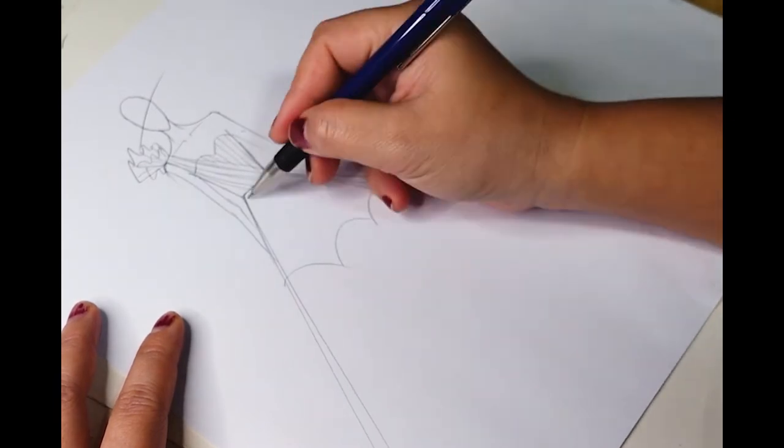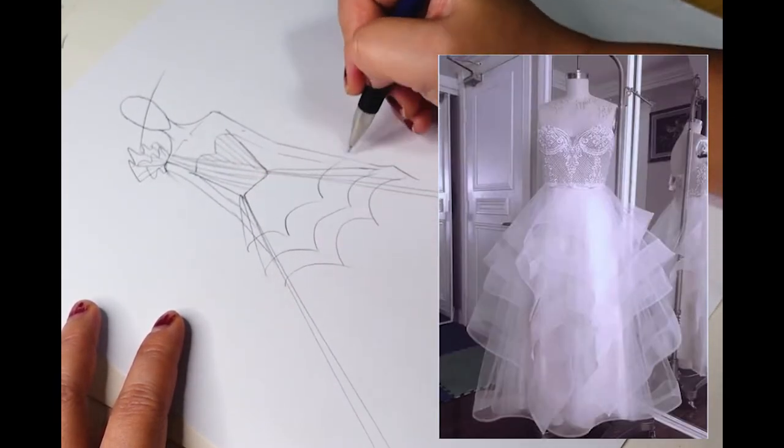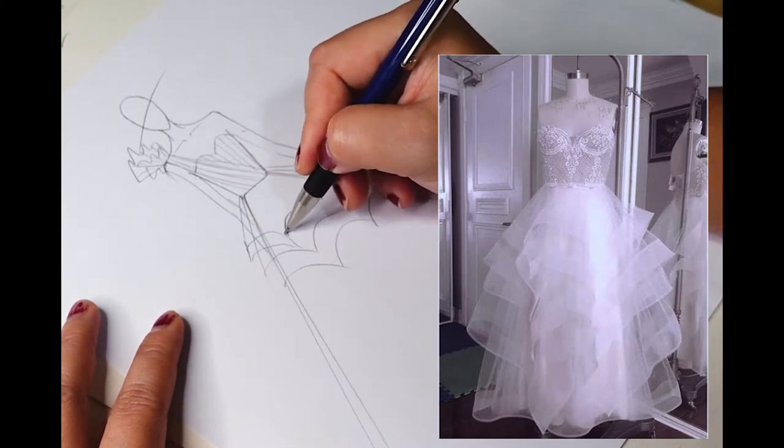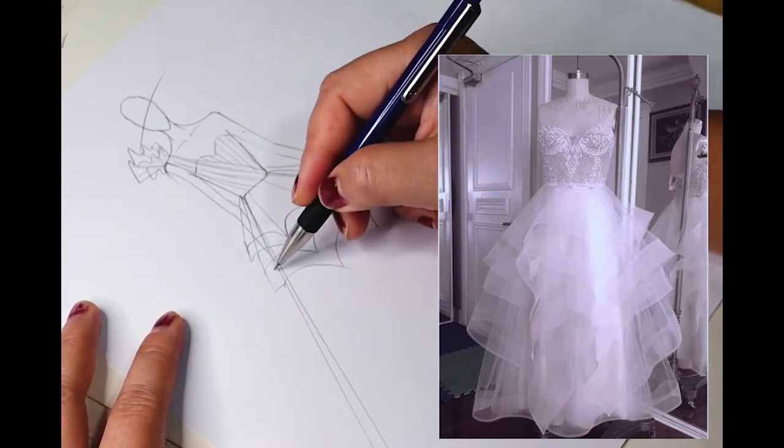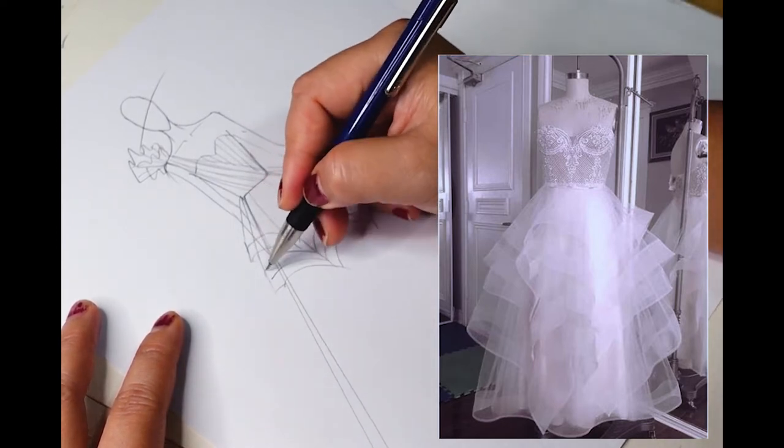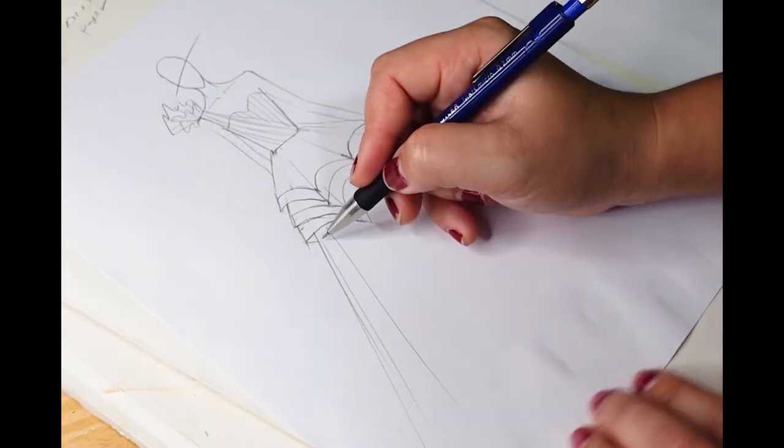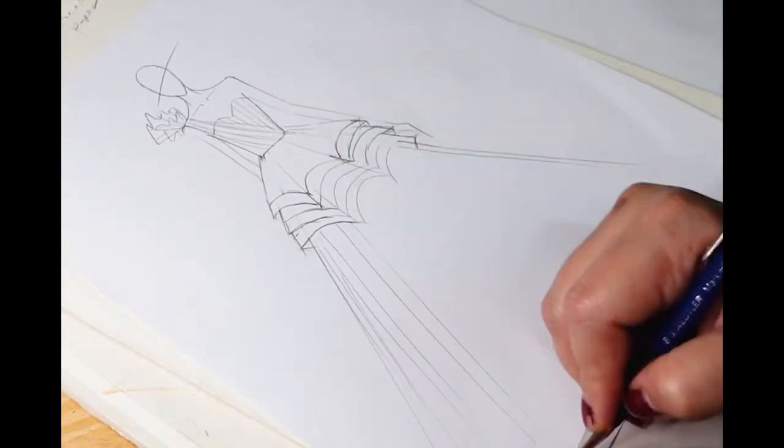I would like to add more design detail, which is the handkerchief skirt. I actually did it for one of my client's bridal gowns and I liked it, so I'm trying to incorporate it in this gown. By this time I already know what type of fabric, what type of silhouette, and the color of the fabric.